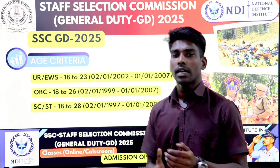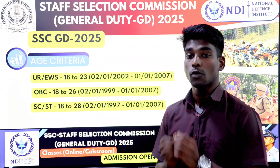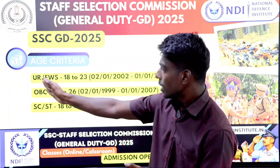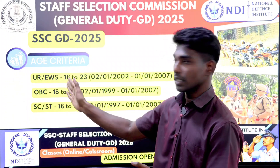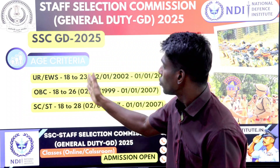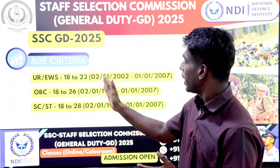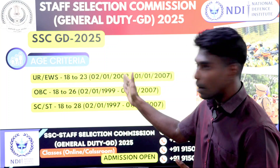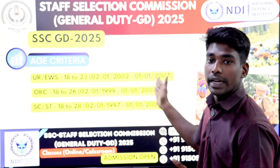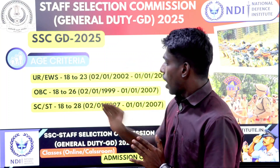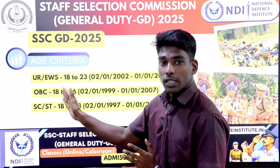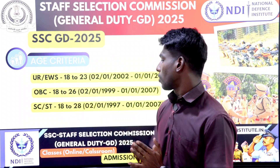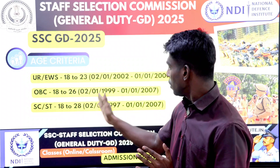Regarding age criteria: who is eligible for this exam? For Unreserved and Economically Weaker Sections (EWS), if you look at the age category, the age range is 21 to 28 years.